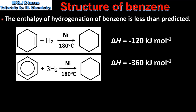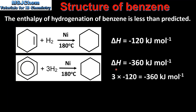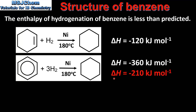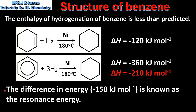Next we look at the chemical evidence for the structure of benzene. The first piece of chemical evidence is that the enthalpy of hydrogenation of benzene is less than predicted. Cyclohexene, with its one carbon to carbon double bond, reacts with hydrogen to form cyclohexane with an enthalpy change of -120 kJ/mol. If benzene contained three carbon to carbon double bonds we'd expect its enthalpy of hydrogenation to be -360 kJ/mol. However, the actual enthalpy of hydrogenation of benzene is only -210 kJ/mol. The difference of -150 kJ/mol is known as the resonance energy.